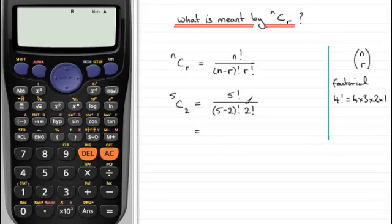And, 5 factorial then is going to be 5 times 4 times 3 times 2 times 1. And, this is all divided by 5 take away 2, which is 3. 3 factorial, that's going to be 3 times 2 times 1. And, this is going to be multiplied by 2 factorial, 2 times 1.